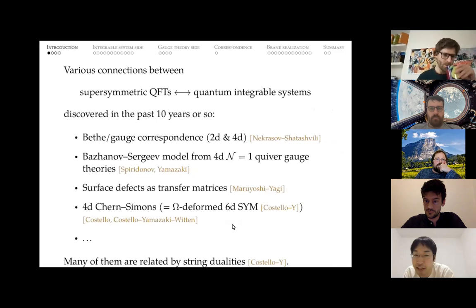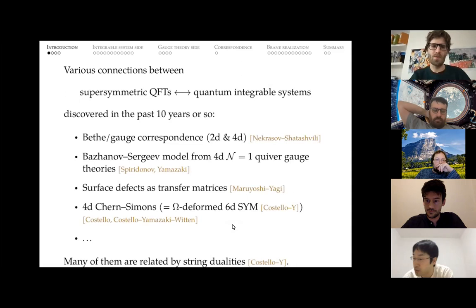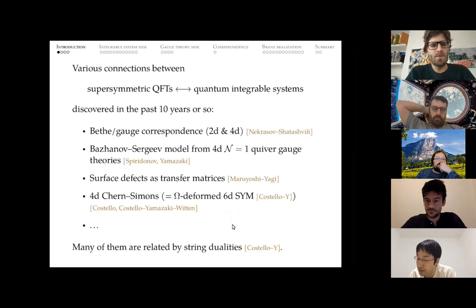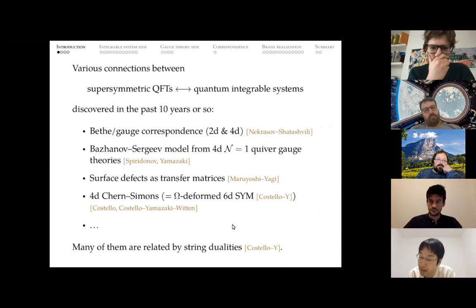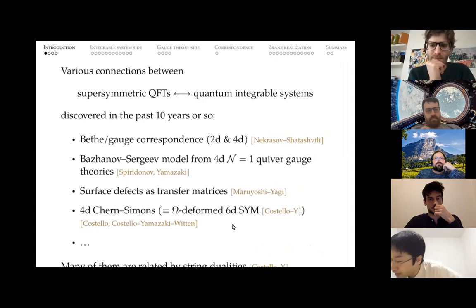In the past ten years or so, there have been various connections discovered between supersymmetric quantum field theories and quantum integrable systems. I list here four such examples which are relevant for my talk. The first one is probably the most famous one, the Bethe gauge correspondence, and there are two versions: either 2D or 4D.